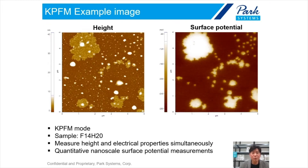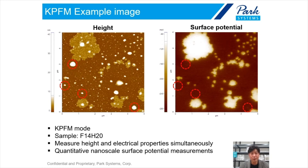Let me show you one good example of KPFM. The sample is F14H20. The image shows clear contrast depending on the electrical properties. This electrical signal, for some structures, follows the height structure. But some structures — like those circular structures — indicate a totally different aspect. It is not following the height image; it is just the sample's own surface potential. We can clearly monitor the electrical signal of a sample surface using KPFM.